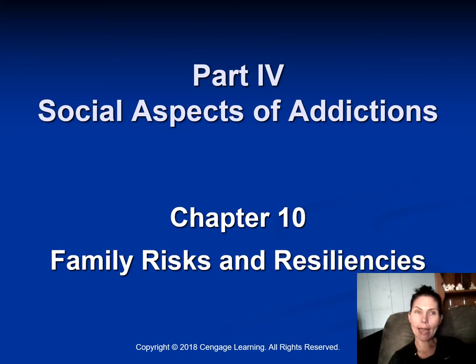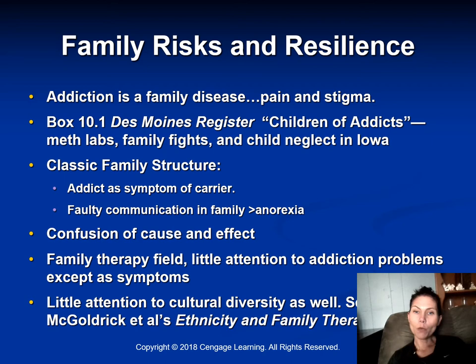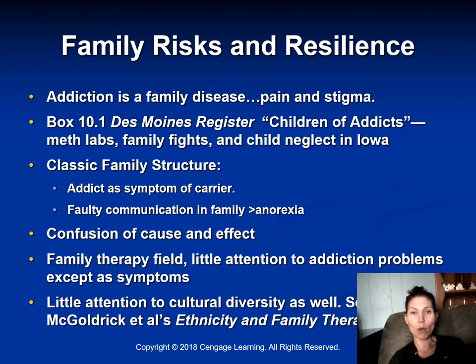Now we're going to get into Chapter 10, which looks at family dynamics, the family system, and family risks and resilience. We know addiction is a family disease. When we look at family systems, we know they're composed of members who are in constant and dynamic interaction with one another. The patterns of interaction are established — who interacts with whom, who talks and who listens, who has authority — and any change in one member's behavior changes the whole family system.